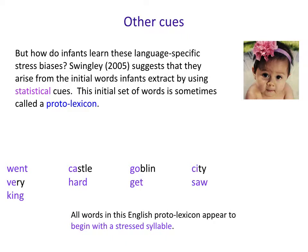For example, if this is an English proto-lexicon extracted using statistical cues like transitional probability, what you would notice is that all of the units in this proto-lexicon begin with a stressed syllable. And so that might encourage an English learner to say: I can just rely on a stress-initial bias to identify where words are in fluent streams of speech.